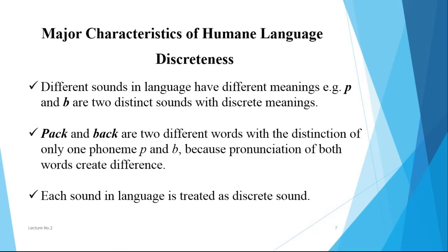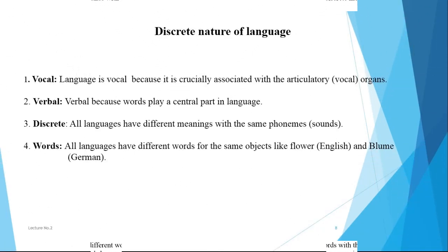The last feature of human language is discreteness. In discreteness, sounds in language carry different meanings, and different sounds create different meanings. For example, 'pack' and 'back' are two different words distinguished by only one phoneme — 'p' and 'b' — because the pronunciation of both words creates a difference. The discrete nature of language depends on four elements: first, vocal; second, verbal; third, discrete; and fourth, words.